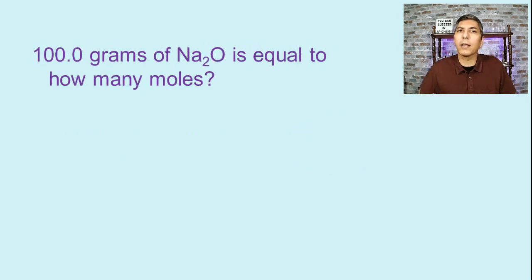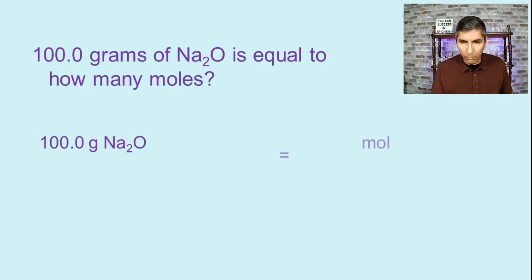Now let's try another example. Let's try a chemical compound. Let's say we have 100.0 grams of Na2O. That's a chemical compound called sodium oxide. That's equal to how many moles? It's done just like the last one was. We start by writing down the 100.0 grams of Na2O. And then at the end, we're trying to solve for moles. So moles will be my final unit. In my conversion factor, I'm going to put grams in the denominator. That way it'll cancel. And then since I'm converting to moles, I'll put moles on the top. How many grams are in one mole of Na2O, sodium oxide?